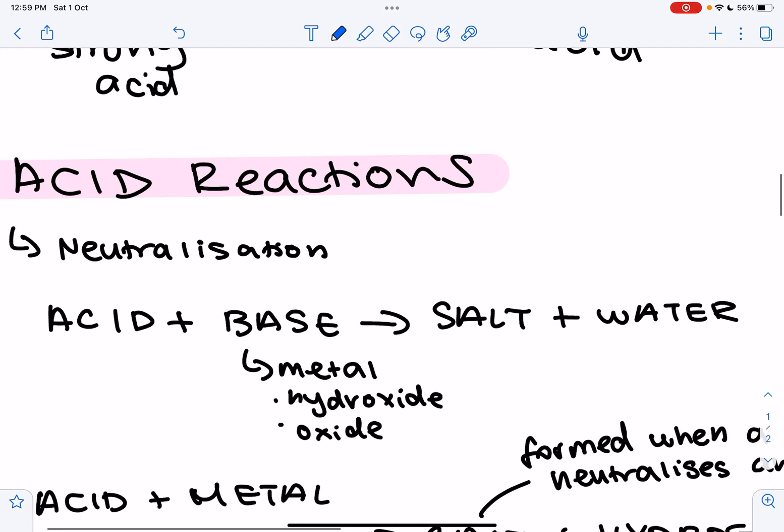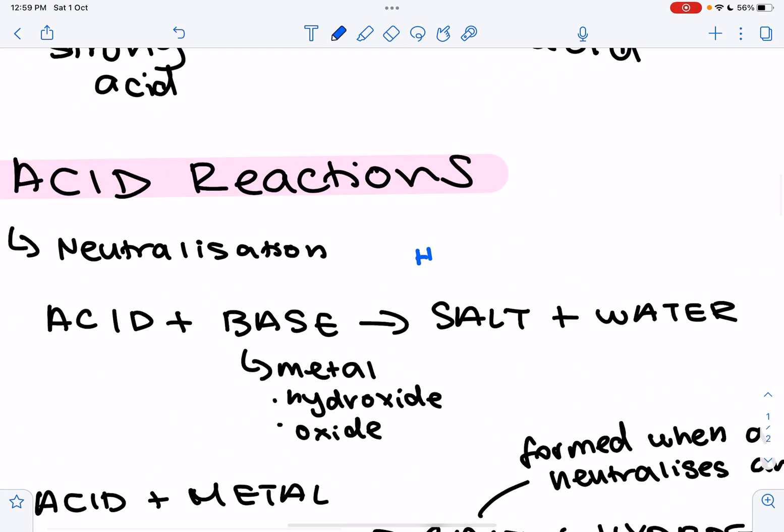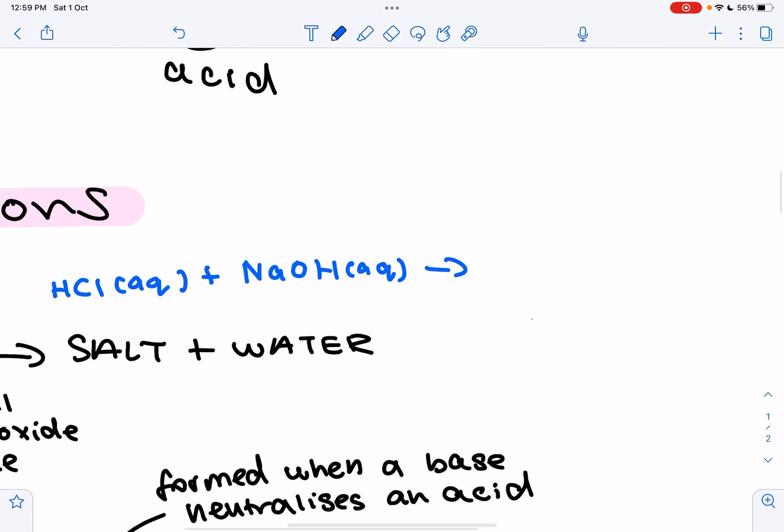Some examples of observations would be that the temperature increases, and it's an exothermic reaction. So let's look at an example of this reaction. So we could have hydrochloric acid, HCl, plus sodium hydroxide would form our salt. In this case, it is sodium chloride plus water.